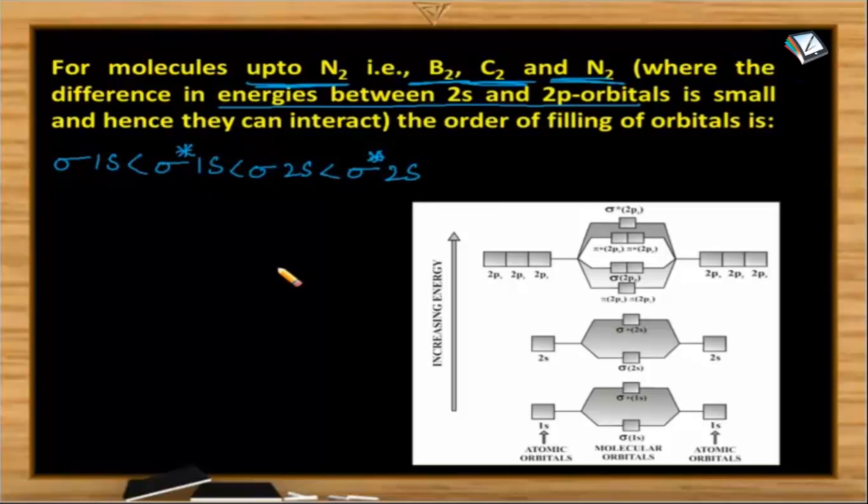And after 2s, we get 2p orbitals. And here we took z axis as a reference. And whenever we are taking z axis as a reference, the 2pz orbitals form the sigma orbital. The remaining 2 form the pi orbitals. So now the order is like this. After sigma star 2s, it is pi 2px, which is equal to pi 2py.